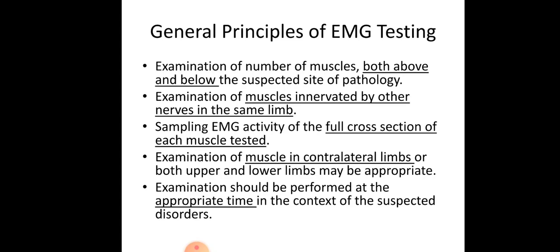Third point: sampling EMG activity of the full cross section of the muscle must be tested — we cannot assess just one fiber, the full cross section is required. Fourth point: examination of muscles in contralateral limbs or both upper and lower limbs may be appropriate, for example in hemiplegia where the entire half side of the body is affected, so both upper and lower extremities should be assessed. Fifth point: examination should be performed at an appropriate time in the context of the suspected disorder, otherwise the MUAP may not be detected.